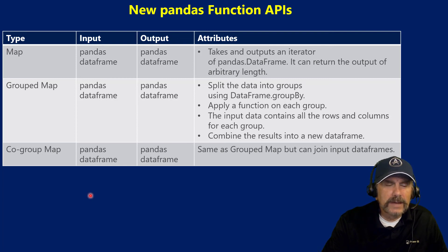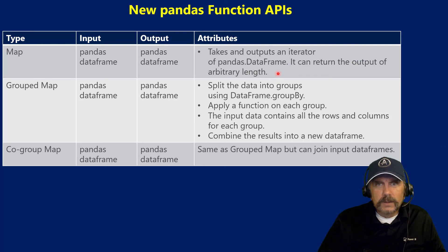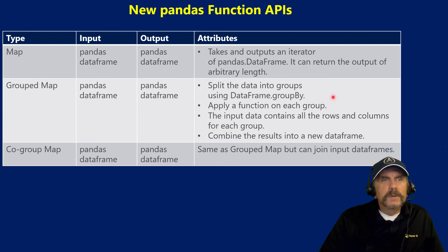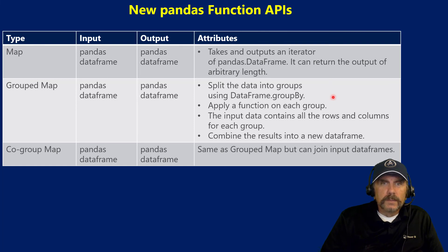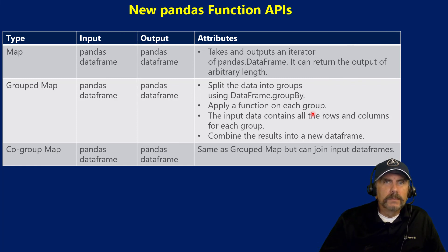This is a really nice feature because now we can actually pass in and get out data frames directly — we can use pandas data frames and work on Spark. The first one, map, takes and outputs an iterator of pandas data frames, and a nice feature is that it can return output of arbitrary length, so we don't have to have the same number of elements going in as going out. The grouped map also takes a data frame in and data frame out — the idea being the split-apply-combine functionality, very popular, which is what we can do with grouped map. And co-group map lets us do the same thing as grouped map, but we can join input data frames as part of that function.